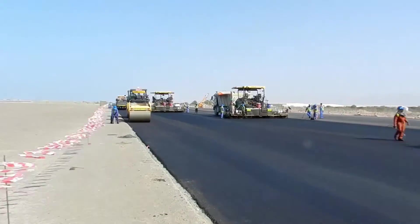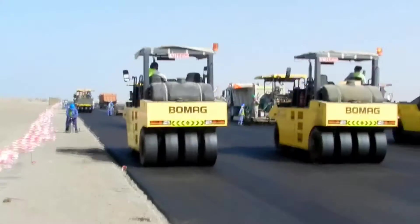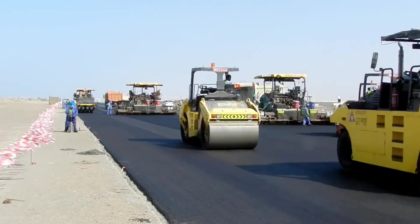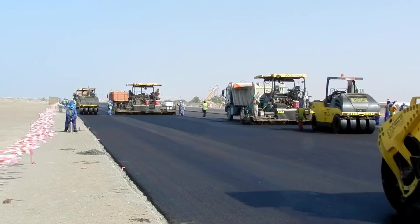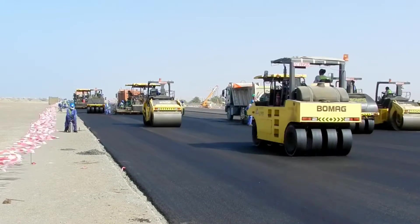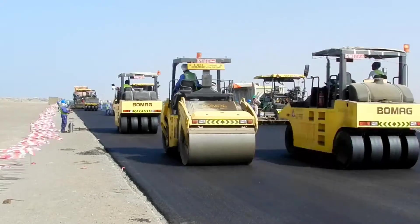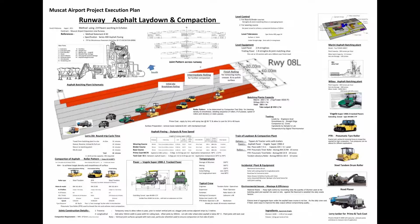Pneumatic tire rollers are used for intermediate rolling to knead the asphalt, achieving the most compaction. Finally, rollers with steel tandem drums are used to compact to an even and polished surface.